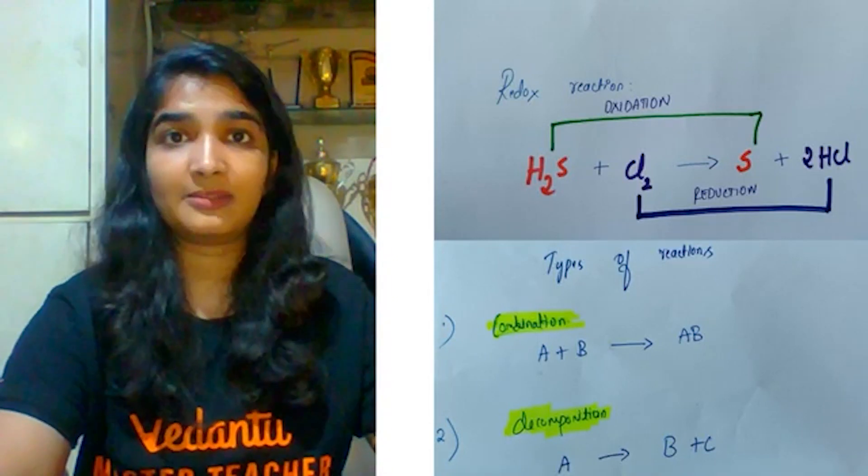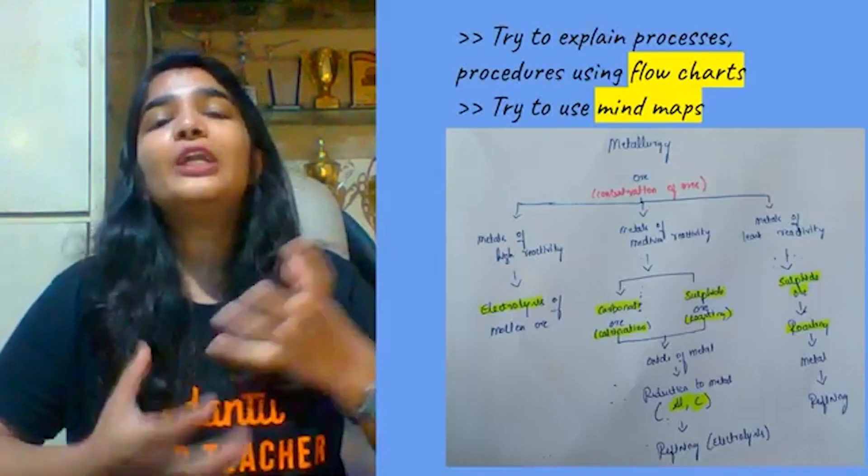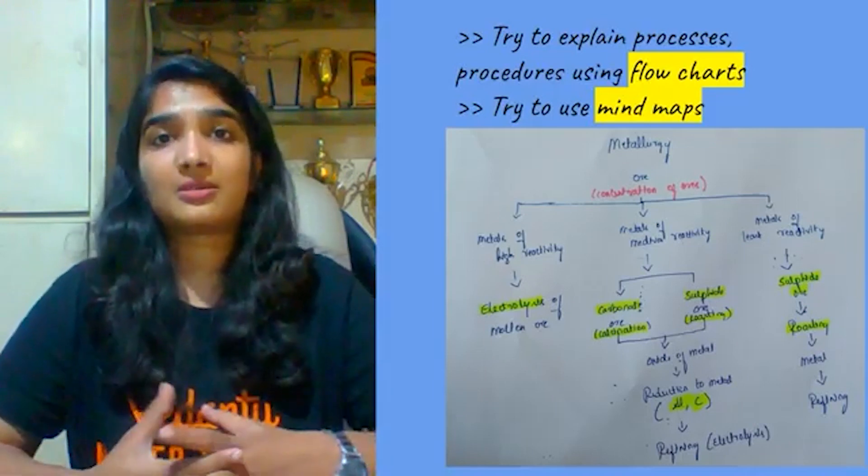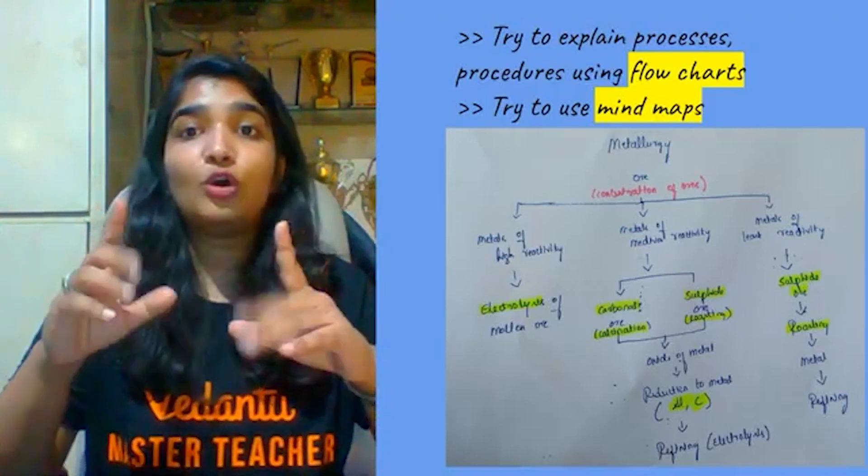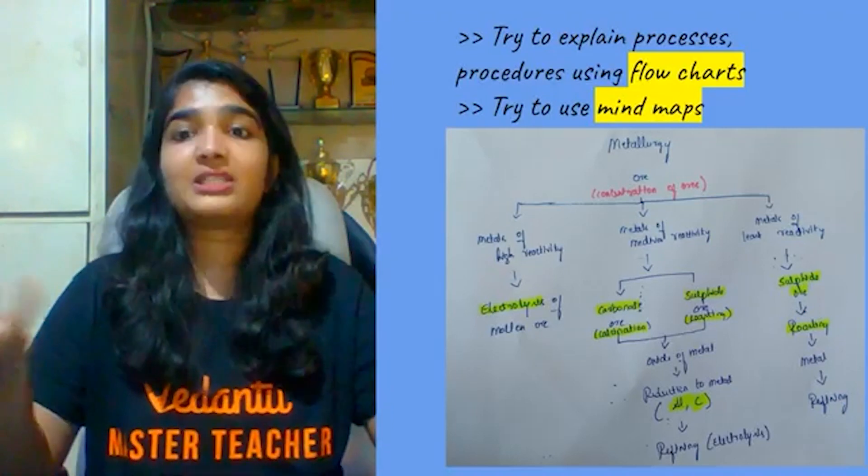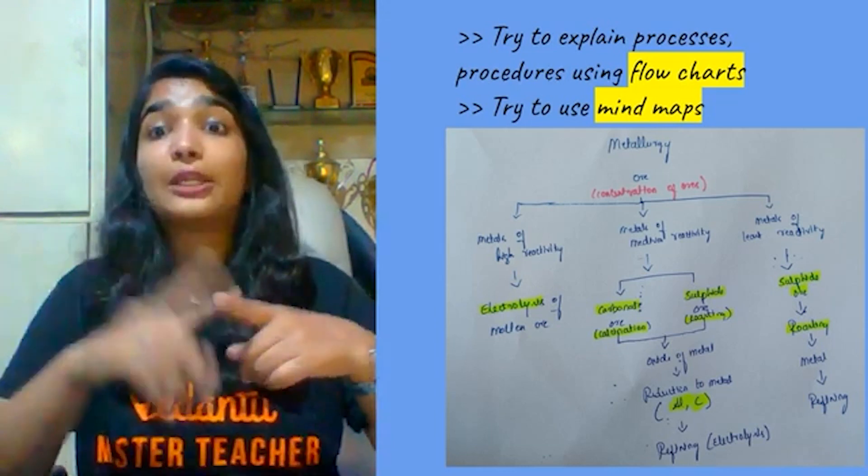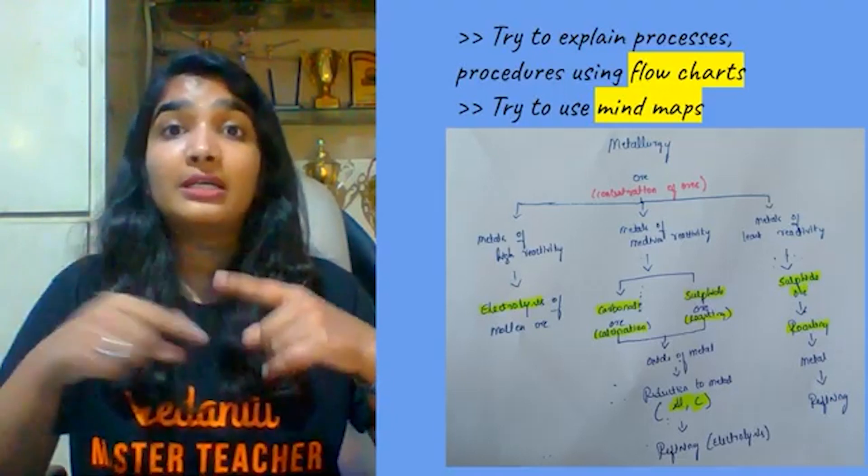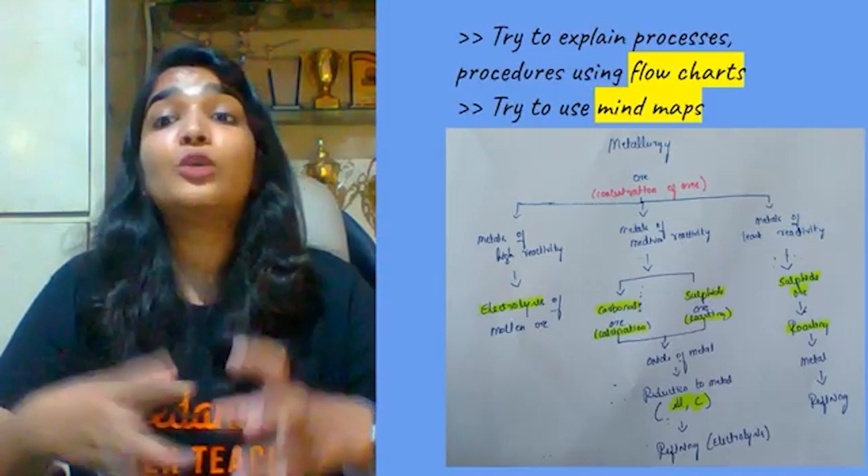And the next point is try to explain the processes or the procedures using flow charts. See here in this, the whole extraction of metals - it's all in a single page because I've used the flow chart. And even I have highlighted the important words: electrolysis, carbon, sulfide, or carbonate - calcination must be done. For sulfide - roasting. And then what are the reducing agents.